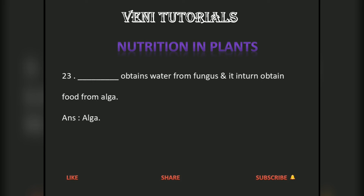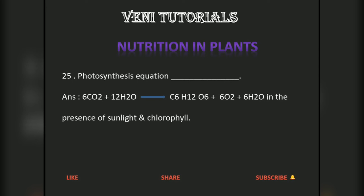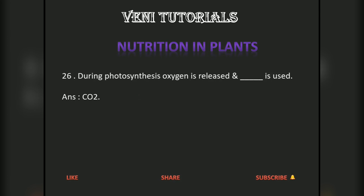Algae obtain water from fungus and in turn obtain food from the algae — this is a symbiotic relationship seen in lichens. Photosynthesis is a chemical reaction. The photosynthesis equation is: 6CO₂ + 12H₂O → C₆H₁₂O₆ + 6O₂ + 6H₂O, in the presence of sunlight and chlorophyll.